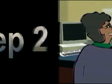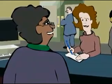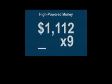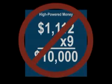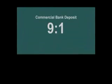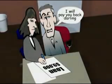Step 2: The seller then deposits this newly created $10,000 at her bank. Unlike the high-powered government money deposited at the central bank, this newly created credit money cannot be multiplied by the reserve ratio. Instead, it's divided by the reserve ratio. At a ratio of 9 to 1, a new loan of $9,000 can be created on the basis of the $10,000 deposit.